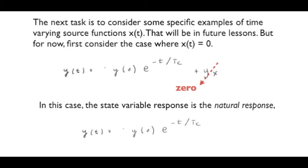But before we end this lesson, let's consider the simplest of values of x(t). We always have time to pick the lowest hanging fruit from the tree. And that case will be when the current or voltage source is zero. In that case, the state variable response is referred to as the natural response. And as you can see, we just need to know the initial value and the time constant to determine the capacitor voltage or inductor current as a function of time.